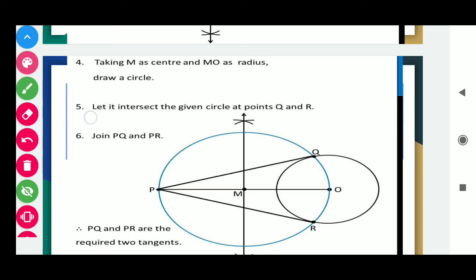Let it intersect the given circle at points Q and R. So when this blue circle intersects the circle of radius 6 cm, it intersects at points Q and R. Now join PQ and PR. In this way point P is outside the circle which is 10 cm away from the center and we have to make the tangents on the circle. So in this way we make PQ and PR.